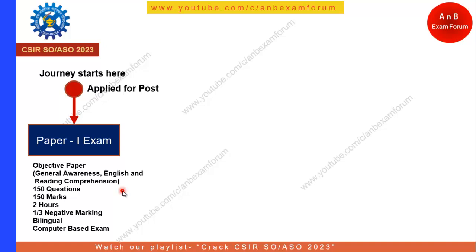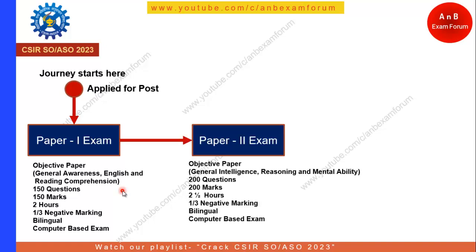After Paper 1, you will have your Paper 2 exam. Paper 1 and Paper 2 can be on the same day or on a different day — CSIR will take care of that and will intimate you as required. Paper 2 will cover general intelligence, reasoning, and mental ability. There will be 200 questions, each carrying one mark — a total of 200 marks — and the time duration will be two and a half hours.